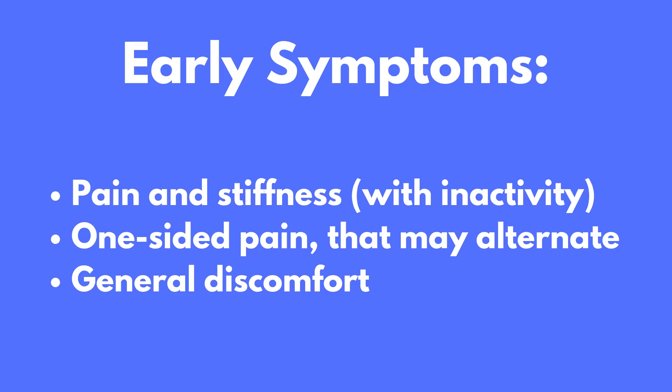Other early symptoms of AS include mild fever, loss of appetite, and general discomfort — caused by increased inflammation in the body due to the autoimmune disease. As AS progresses, the pain usually becomes more frequent and chronic, felt on both sides. Random flare-ups can last for several weeks. Over months or years, stiffness and pain may slowly work its way up into the spine and neck, and may spread to the ribs, shoulder blades, hips, and ankles.